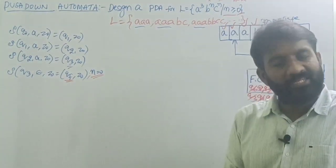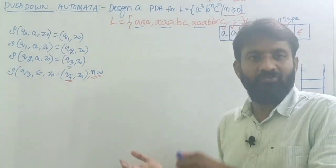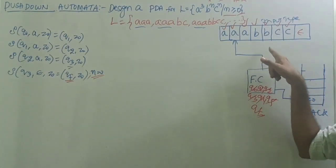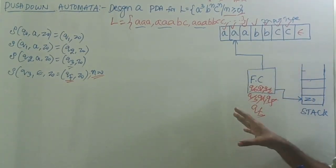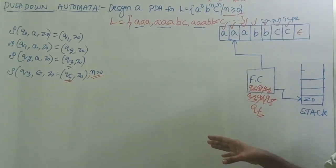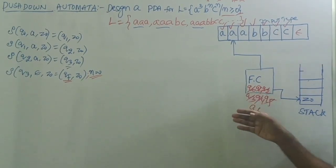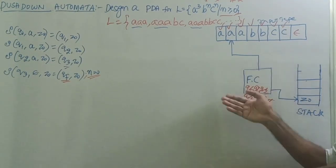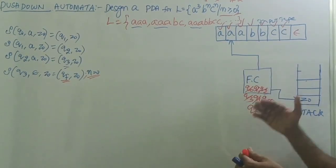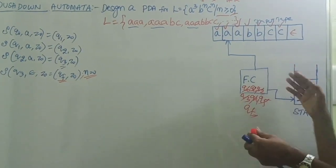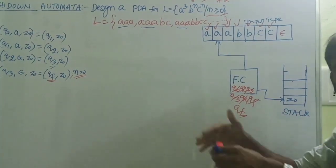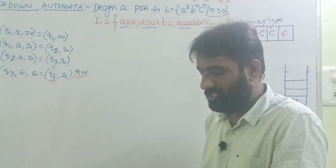Now assume N equals 1 or 2. For example, N equals 2: there are 2 B's followed by 2 C's. The logic is: read every B onto the stack, and for every C, map the top-of-stack symbol with B and do the pop operation. When all C's are exhausted, all B's in the stack are also exhausted, so we can move to the final state. Let me write the transitions.